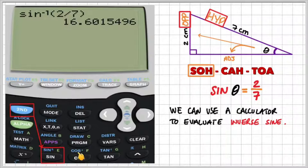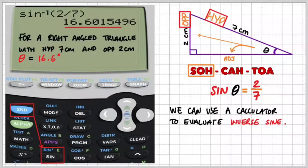Likewise, on cosine, there's an inverse of cosine, and the tangent ratio has a little inverse of tan. So inverse of sine, 2 over 7 gives us a value of 16.6. So for a right-angled triangle with a hypotenuse of 7cm and an opposite length of 2cm, theta is equal to 16.6 degrees.